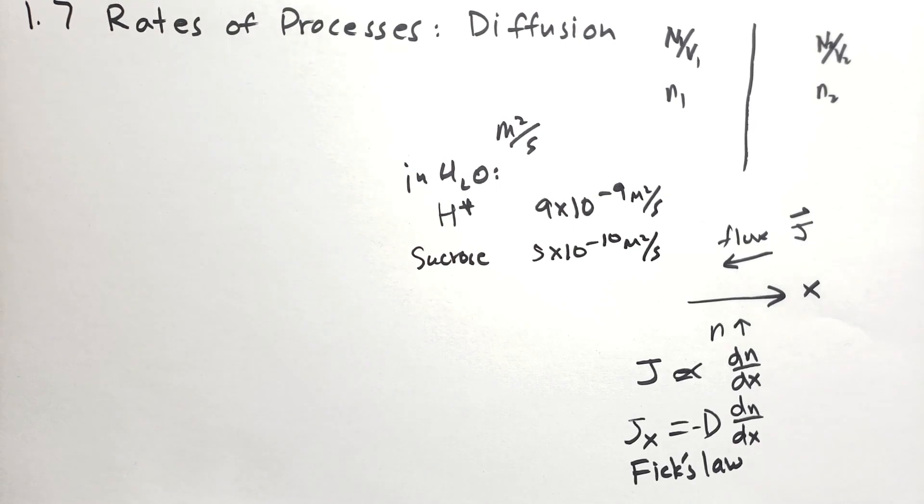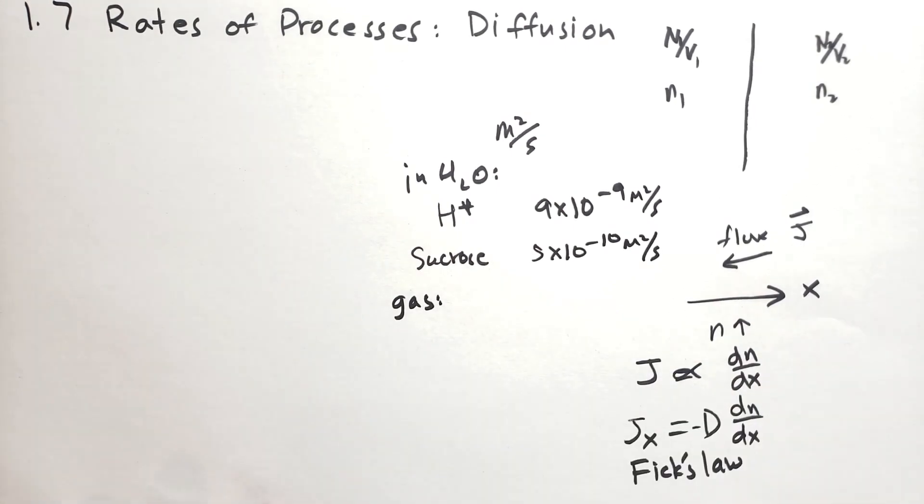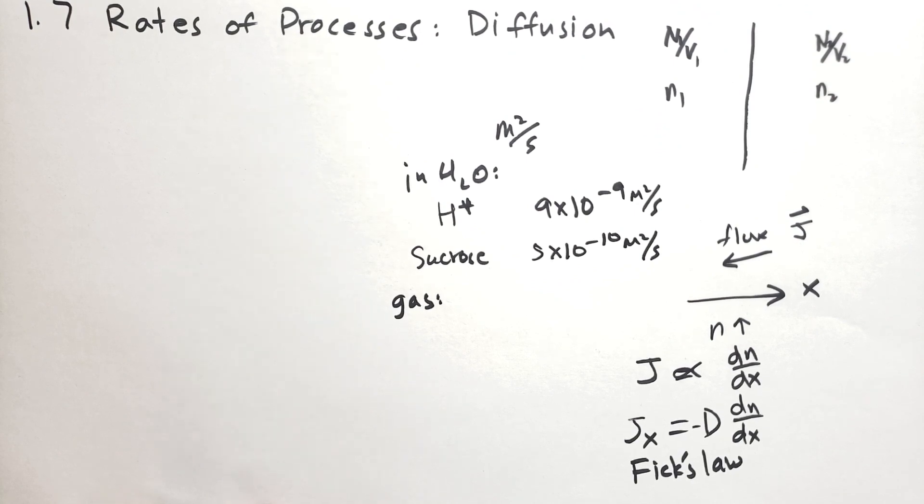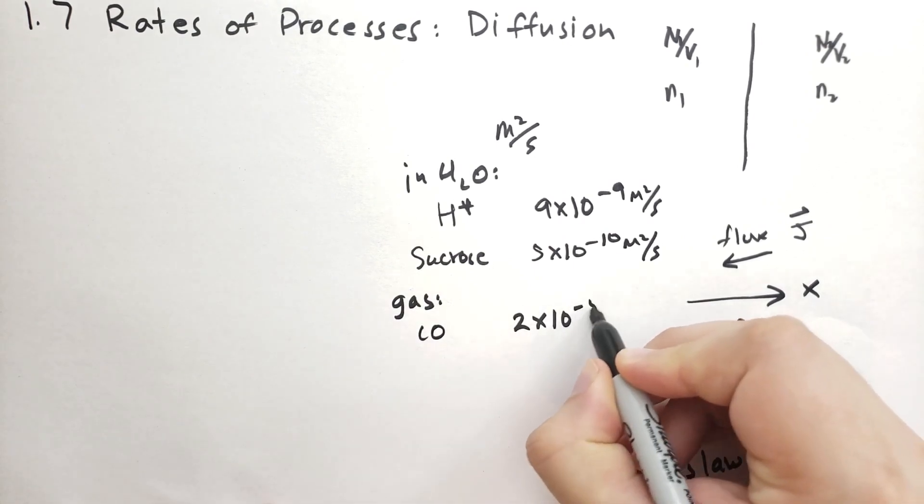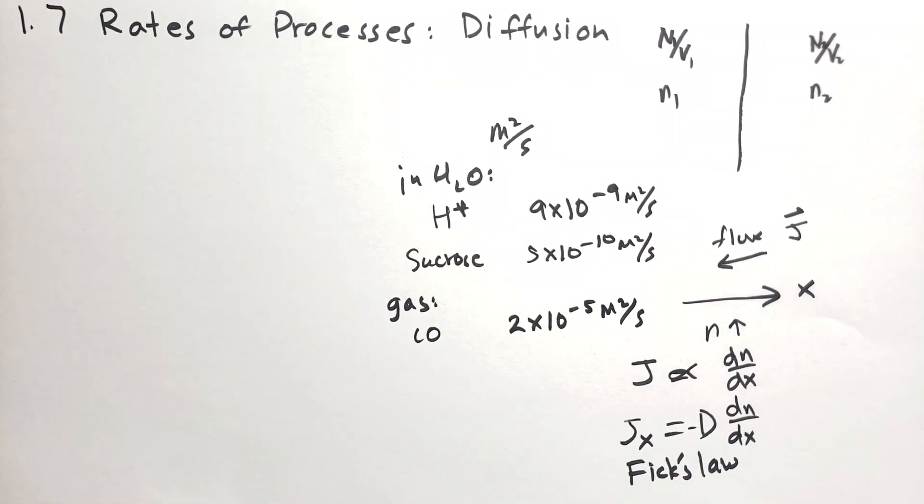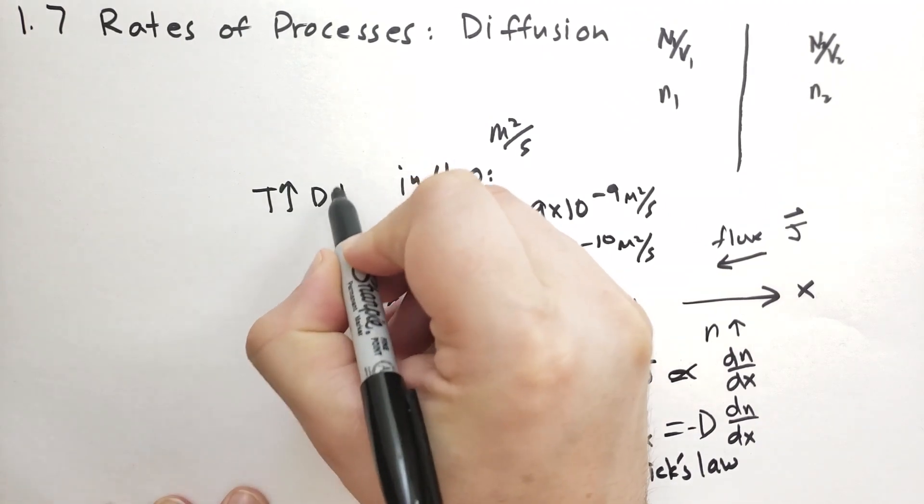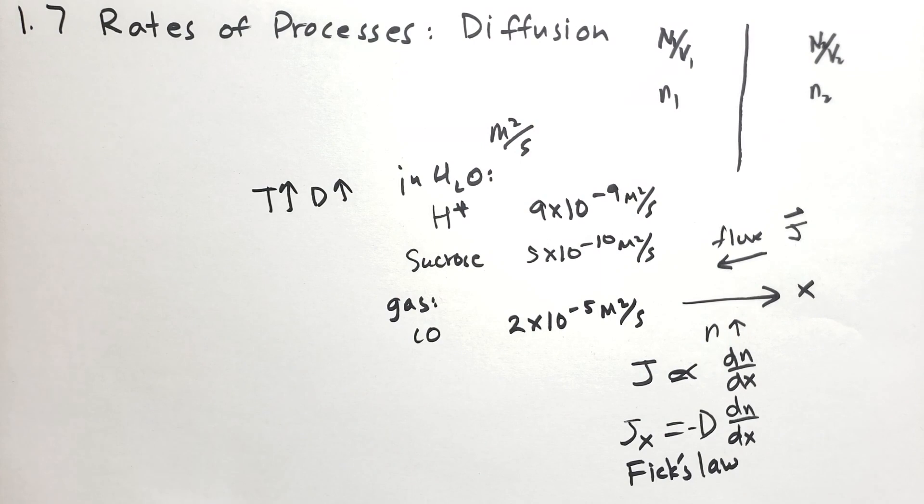In a gas, diffusion happens much quicker. So carbon monoxide will diffuse at a rate of 2 times 10 to the minus 5. And other molecules of similar size have very similar D values. And there's also a temperature dependence. As temperature rises, diffusion constant coefficient also rises. That makes sense. You can just imagine that it's mixing quicker.